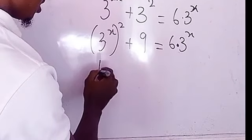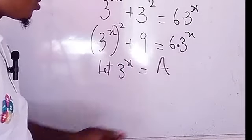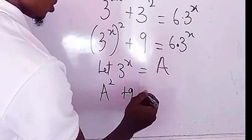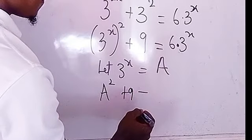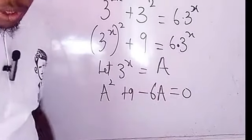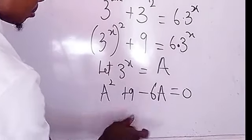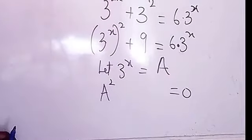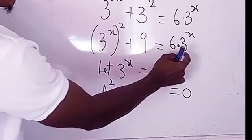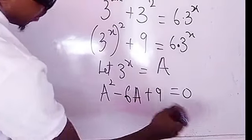Now we are going to do a substitution. Let three to the power of x equal a. So this becomes a squared plus nine. Transposing the right side gives us a squared minus six a plus nine equals zero. We rewrite it in standard form with minus six a in the middle.